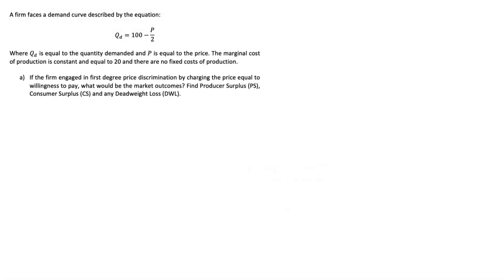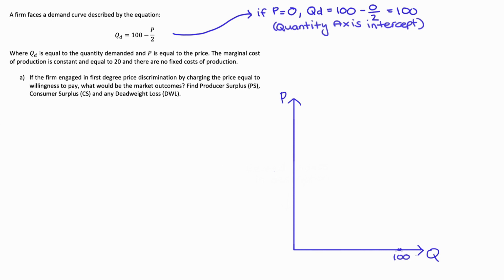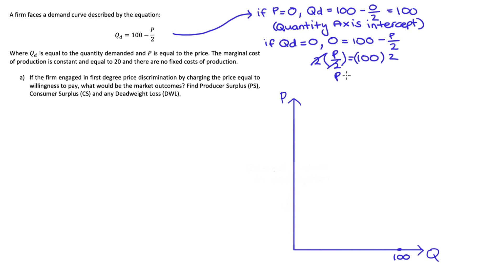The first thing I'm going to do to set everything up is draw the demand curve described in this question. I'll put two axes down — price on the vertical axis and quantity on the horizontal. From the demand equation, when price equals zero, quantity demanded equals 100 minus 0 over 2, so just 100 — that's our quantity axis intercept. If quantity equals zero, solving gives P over 2 = 100, so P = 200 — that's our price axis intercept.